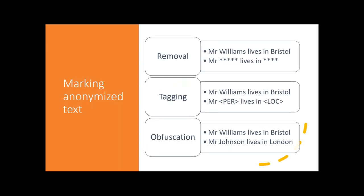Once you've identified personal health information, you can do three things. First, remove it entirely. Second, tag it — keeping some semantic information by replacing 'Williams' with '[PERSON]' and 'Bristol' with '[LOCATION]'. Third, obfuscation — the most sophisticated approach: you identify 'Williams' as a person's name and instead of substituting with a tag, you substitute with a random name like 'Johnson.' So you anonymize by replacing pieces of personal health information with random alternatives.